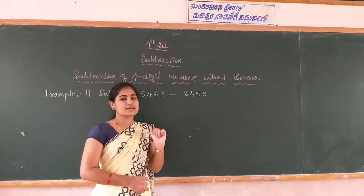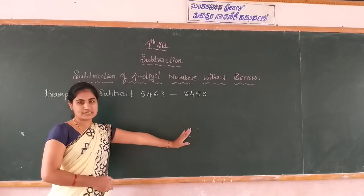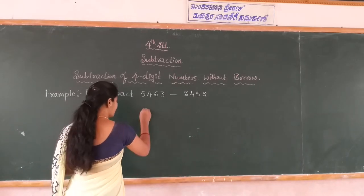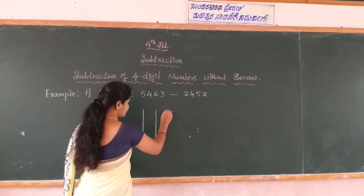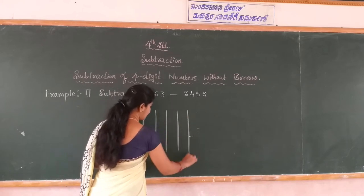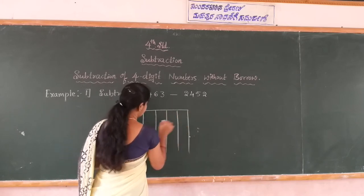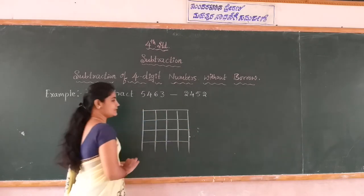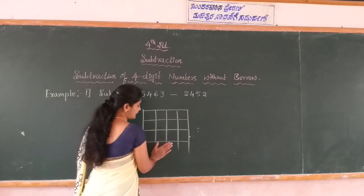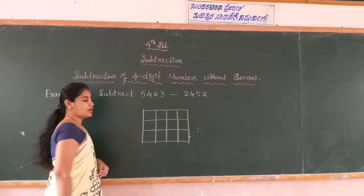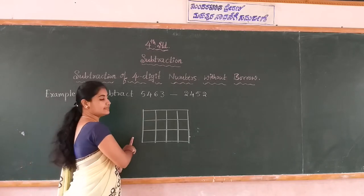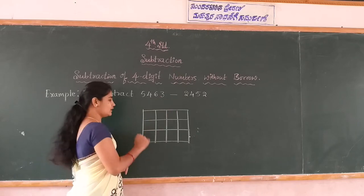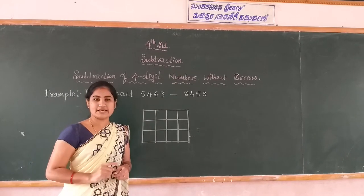Then you subtract the four digit numbers starting from the ones place. First you write the subtraction box with columns: thousands, hundreds, tens, ones. There is no borrow in this box because we will subtract the numbers without borrow. Write the two numbers one below the other with respect to their place values.